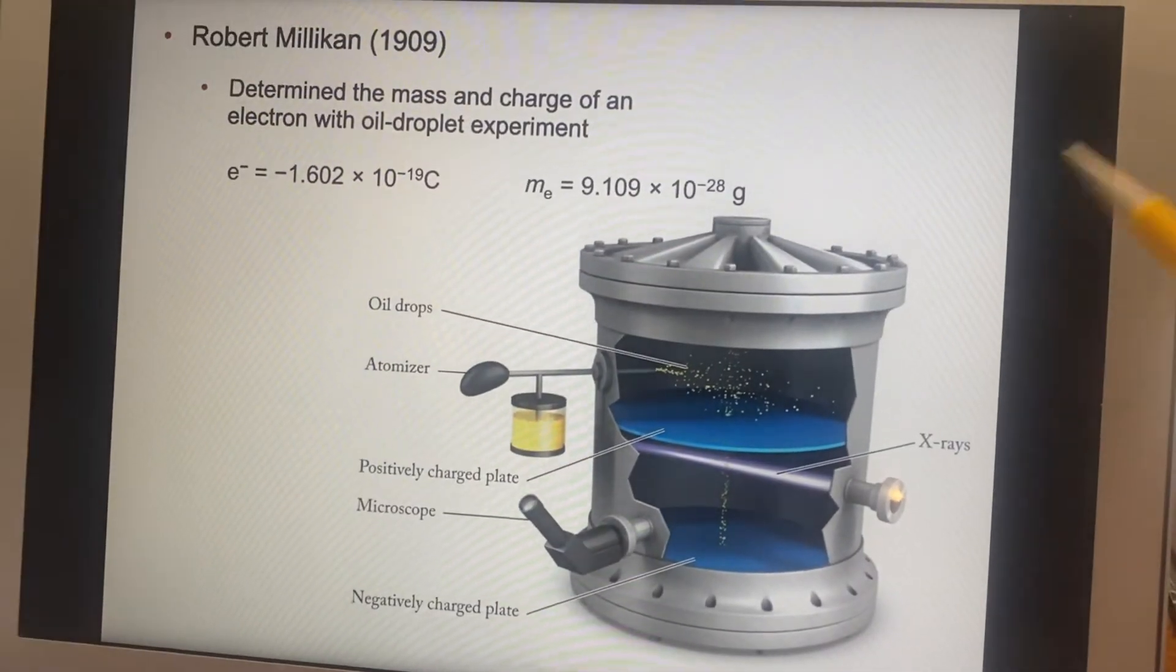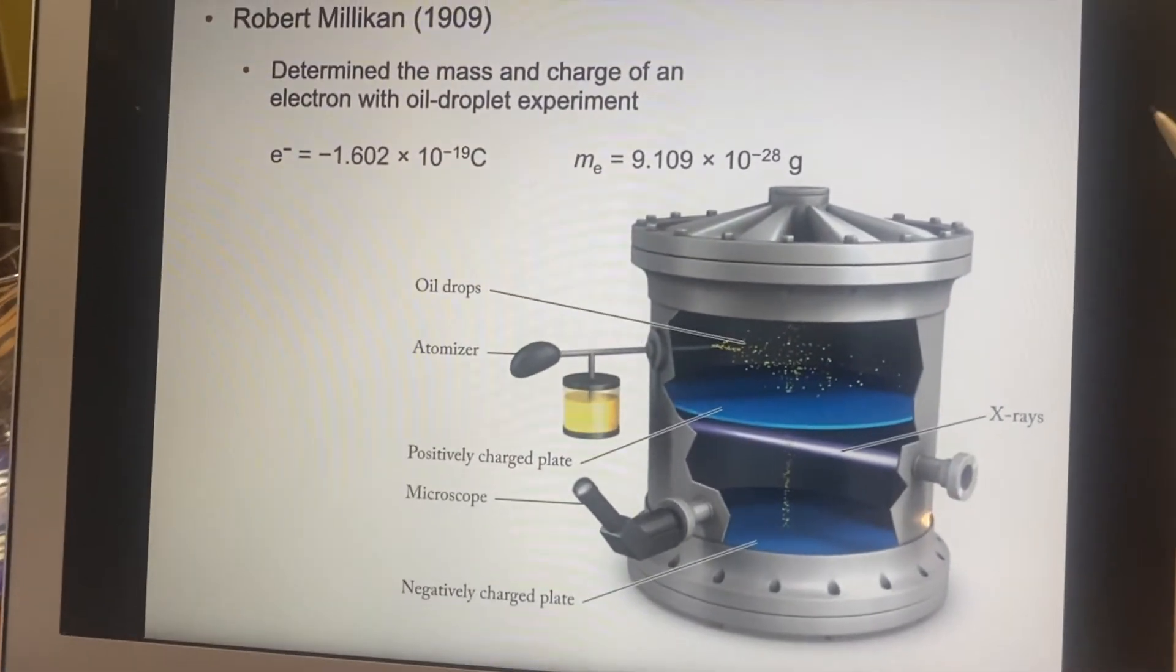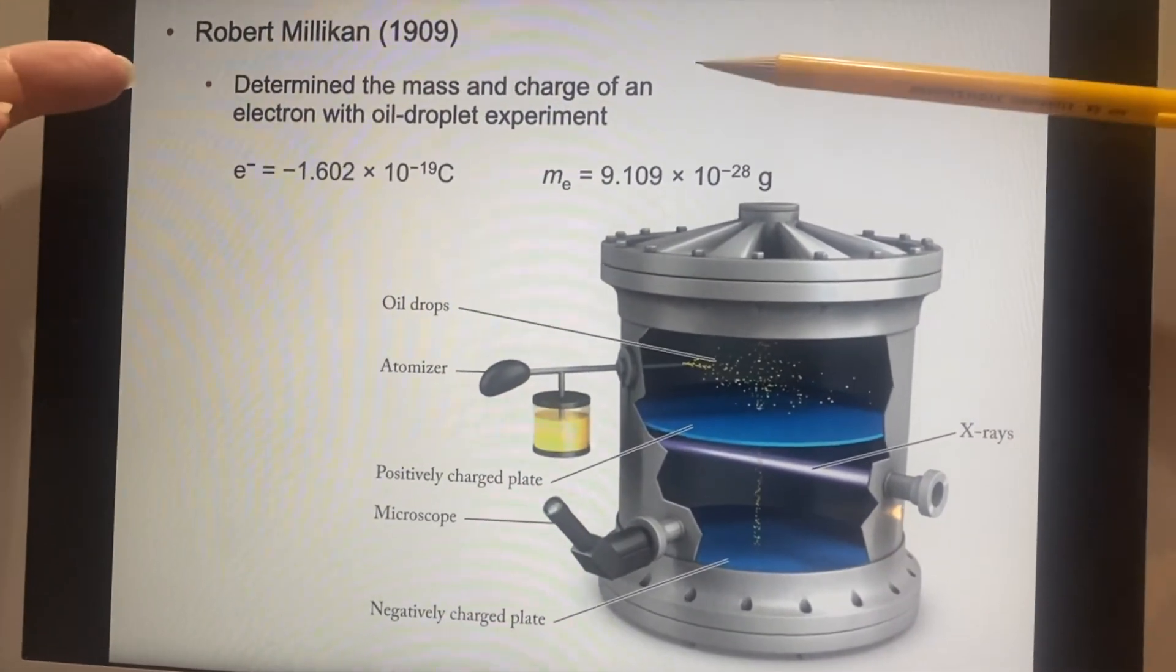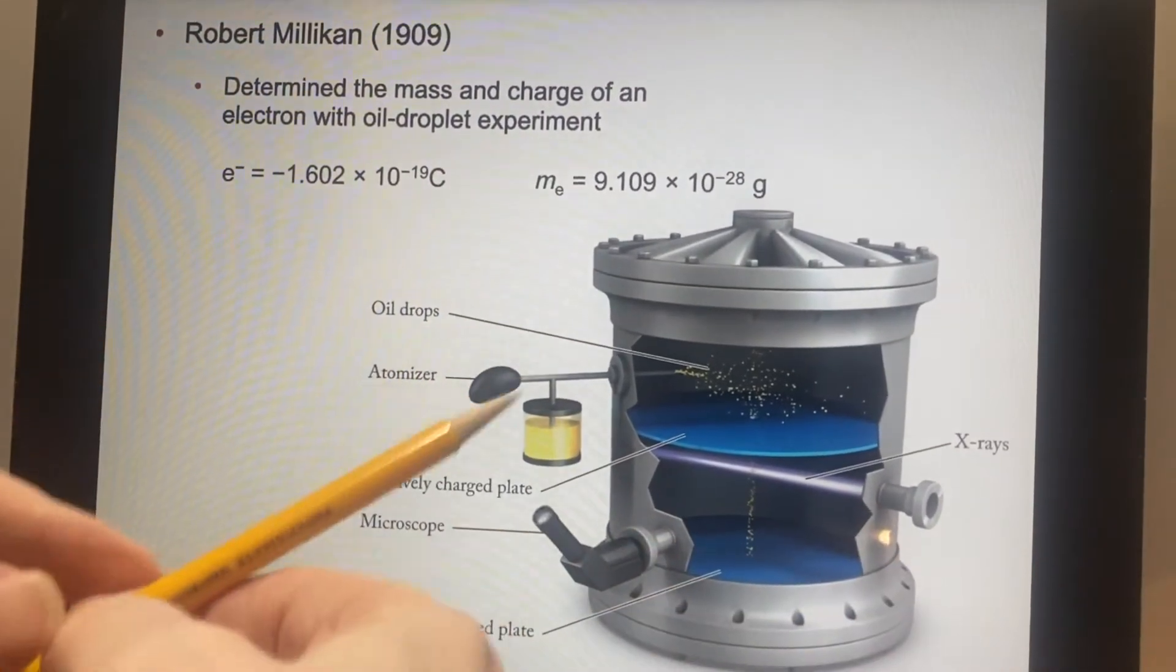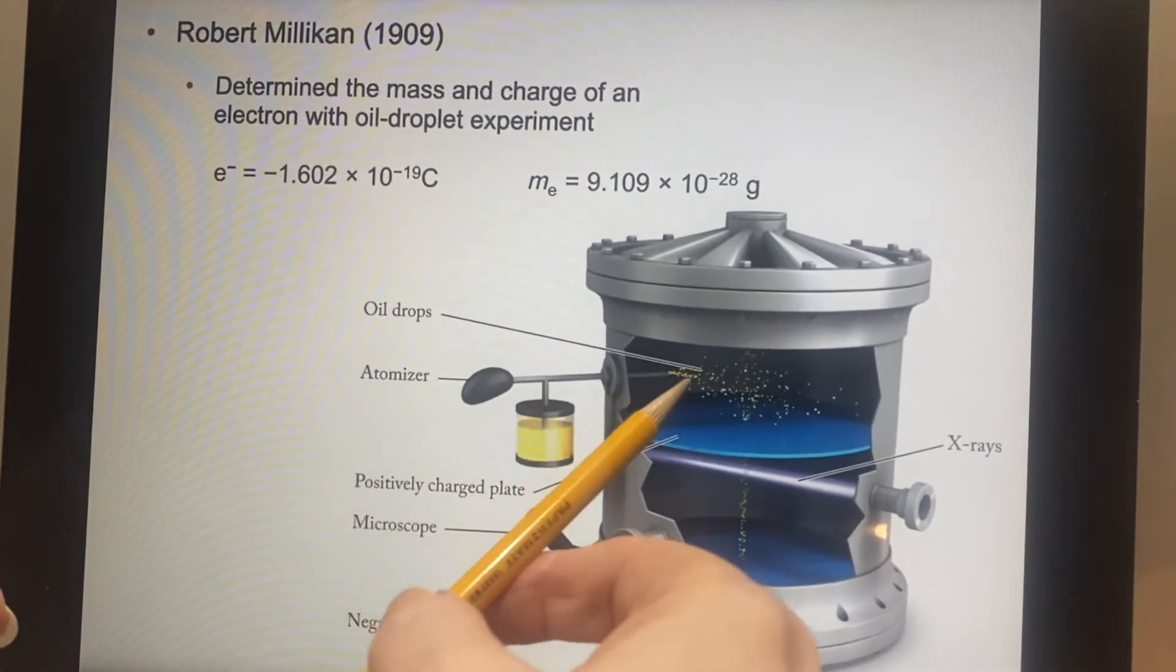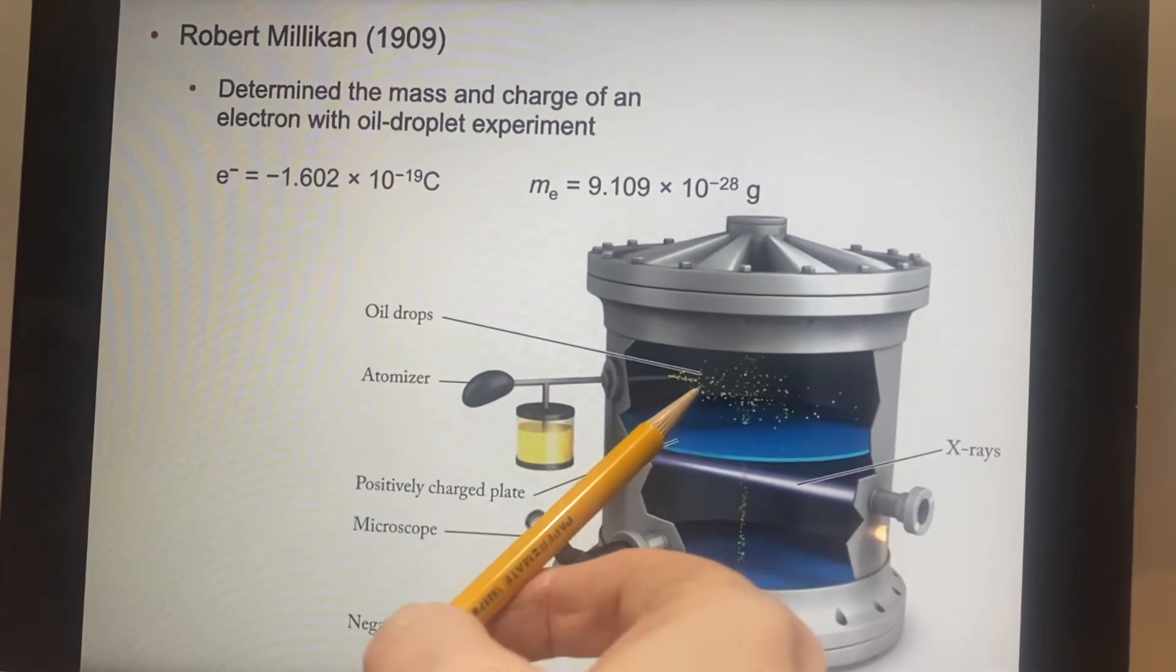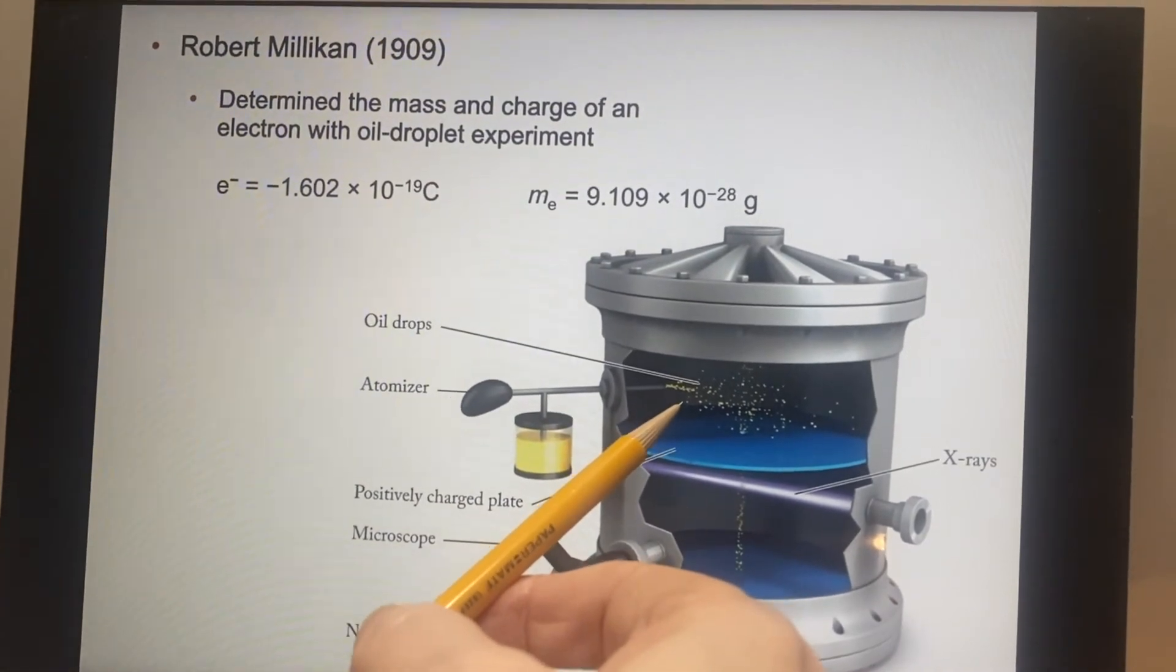Robert Millikan, now you can see this is more than 10 years later because at that point, they've got the ratio of the mass to the charge, but they really like to know the mass and the charge separately instead of as a ratio. He came up with this oil droplet experiment and what it consisted of. Here's an atomizer. You can think of this as like a perfume bottle. It'll emit a very fine spray. In this case, it's oil drops. And they're very consistently sized because they tend to fall into a particular range of droplet size that is stable.